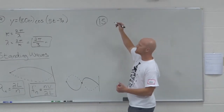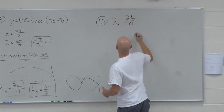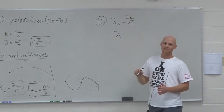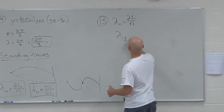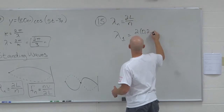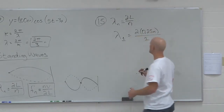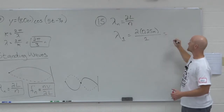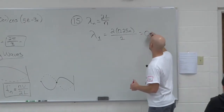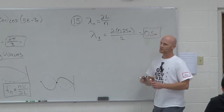In finding the fundamental wavelength — being fundamental, what's N? One. And so in this case, what's the length of the string? 0.25 meters. 2L divided by 1, and your wavelength comes out to twice as long as the string, as we looked at earlier.